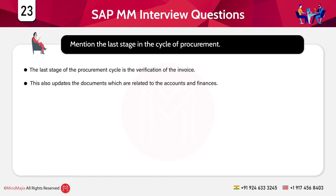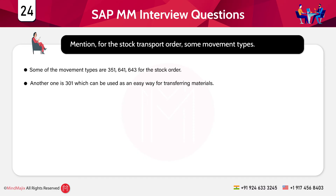The next question is: what is the last stage in the procurement cycle? The last stage is the verification of the invoice. This also updates documents related to accounts and finances. There is a difference between a real invoice and a blocked one — the real invoice can be handled by invoice verification.